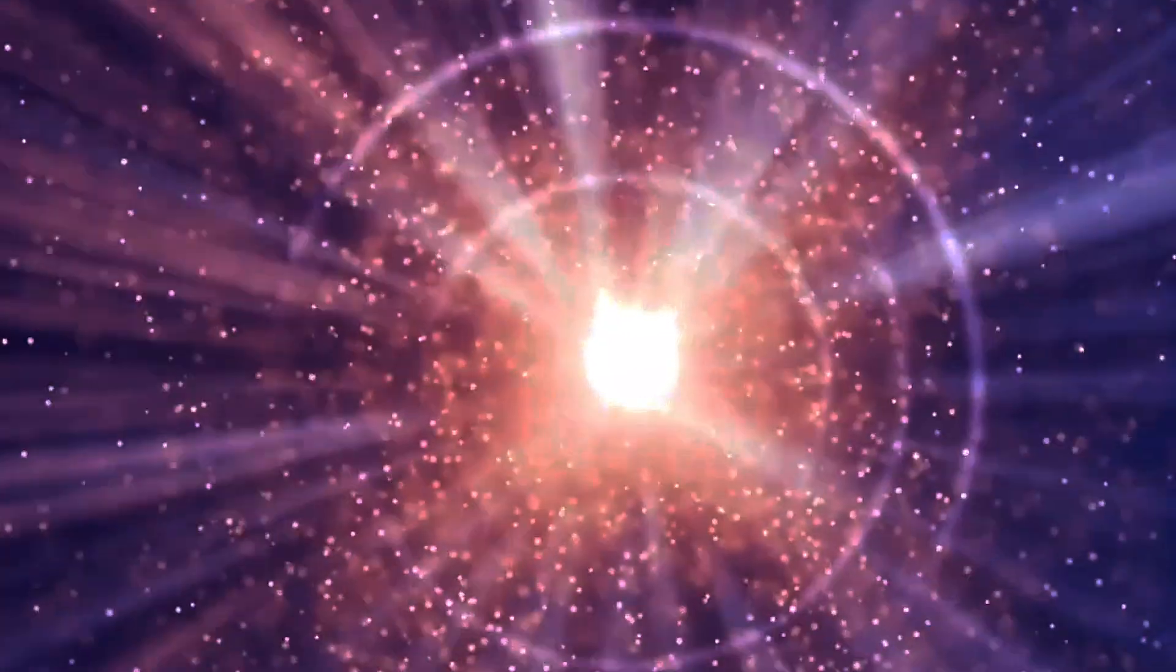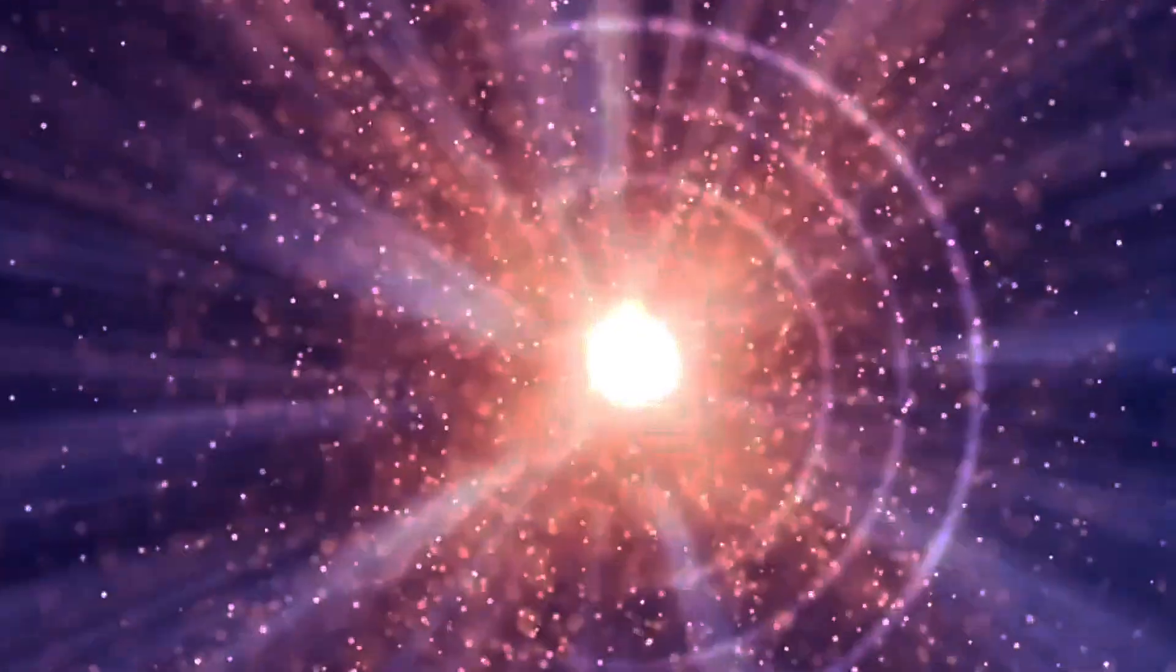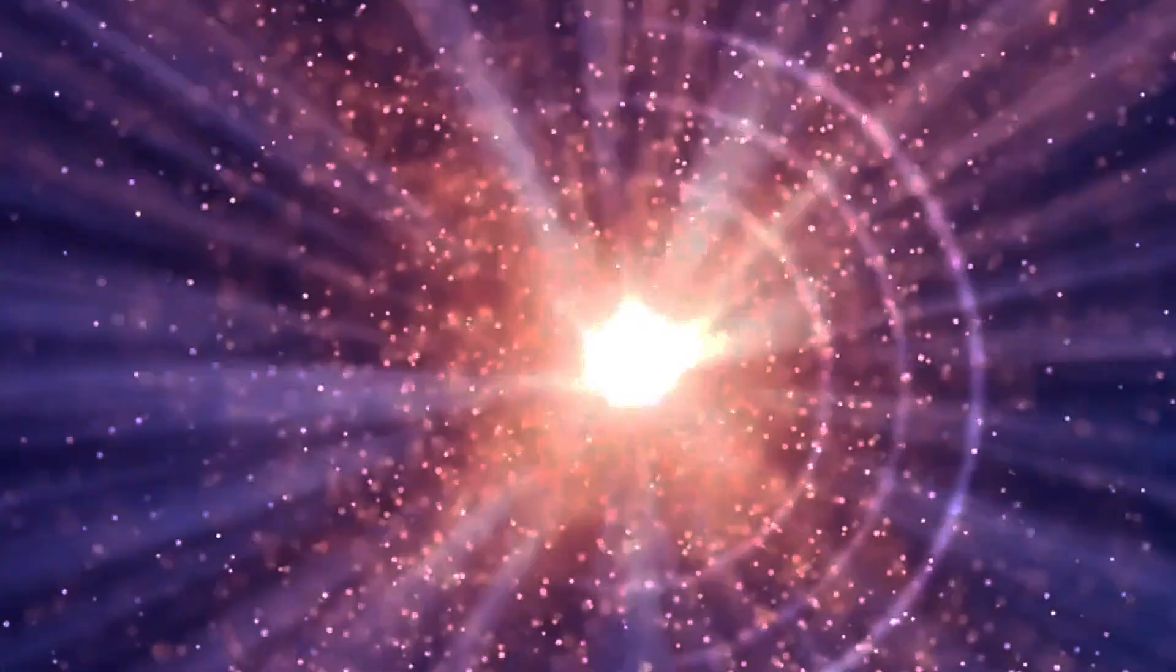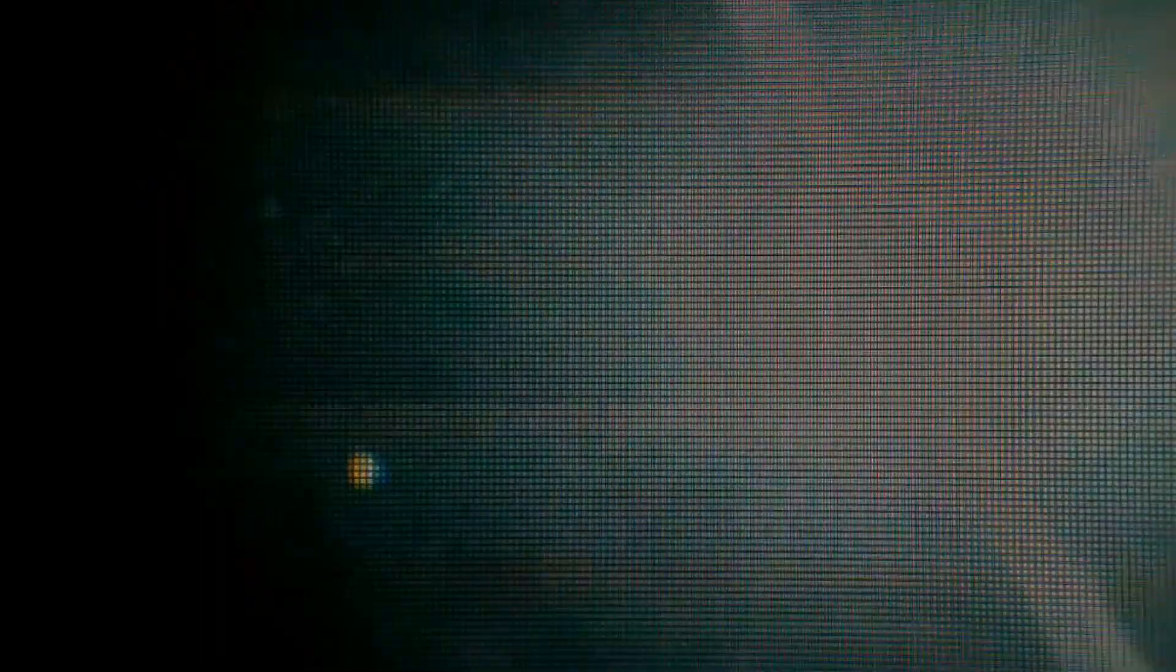Gamow noted that as the universe expands, the wavelength of all forms of light within it gets stretched by the expanding universe, lengthening their wavelengths and lowering their energies. As a consequence, he reasoned, if we extrapolated backwards, that light must have been at shorter wavelengths, higher energies, and more closely packed together.